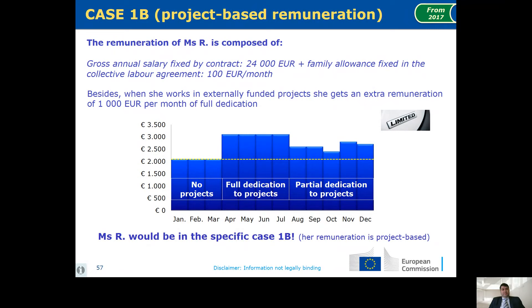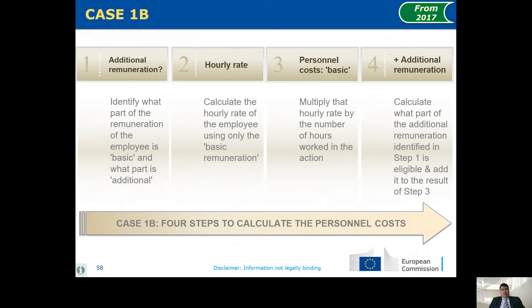Here is an example. Someone has a fixed salary contract or family allowance and then, if they work in funded projects, they receive 1,000 euros more per month — meaning we are in project-based remuneration. Here are the steps for these calculations when doing your checks. This approach was introduced from 2017, and before that there was another definition for additional remuneration.